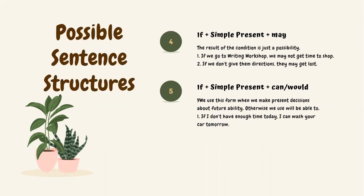Fourth structure: if plus simple present plus 'may' — the result of the condition is just a possibility. For example: 'If we go to the writing workshop, we may not get time to shop'; 'If we don't give them directions, they may get lost.' Fifth: if plus simple present plus 'can' or 'would' — used when making present decisions about future ability, otherwise we use 'will be able to.' For example: 'If I don't have enough time today, I can wash your car tomorrow.'